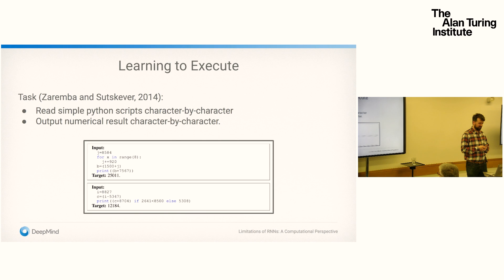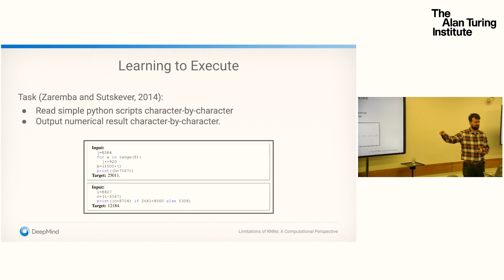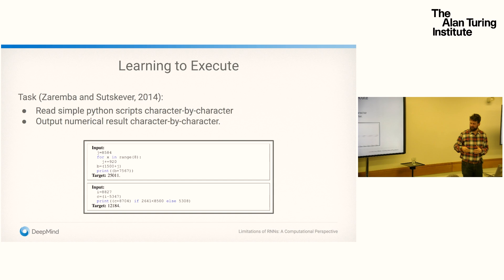Another application was 'learning to execute,' shown by Zaremba and Sutskever in 2014. The idea is to read a Python program character by character as the source sequence, and the target sequence would be the result of that computation, output character by character. You have to take this result with a grain of salt — they used teacher forcing, feeding in the right character regardless of whether it was predicted. Their accuracy results are somewhat misrepresentative, but the fact that it worked at all for small, unseen code at test time was fairly mind-blowing.